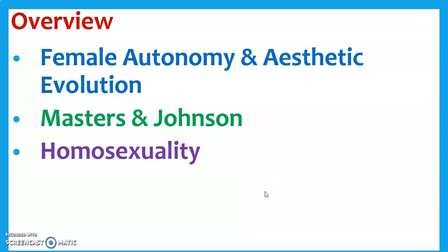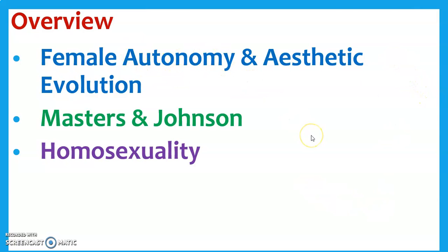The big ideas for this one: aesthetic evolution and how that's different from adaptive evolution. We'll look at female autonomy and how that has shaped basically all life on Earth. Autonomy is referring to female independence, especially in regards to mate choice — being able to choose your mates.